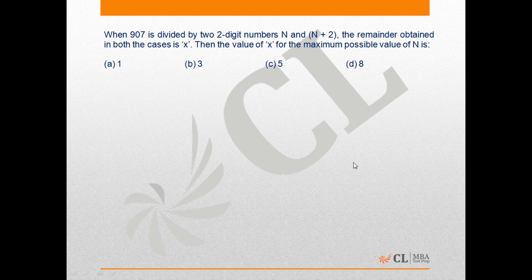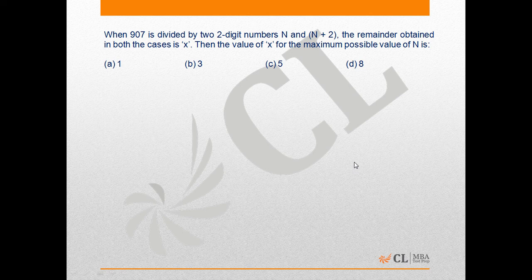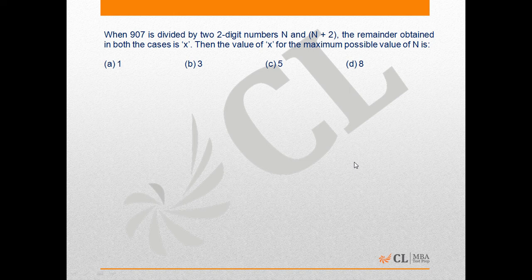Given that 907 is divided by 2-digit numbers N and N+2, the remainder obtained in both cases is x. The question asks for the maximum possible value of N.